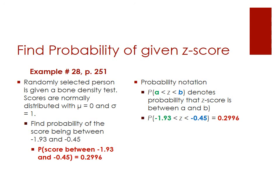Writing that out in probability notation, we place Z in the middle between the less-than and greater-than symbols: Z1 value of negative 1.93 comes first, then Z greater than that but less than our Z2 value of negative 0.45. This is the proper notation for this problem.